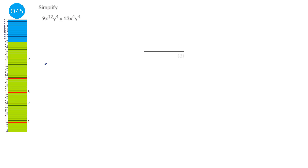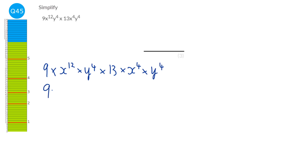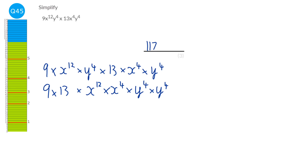Writing in all the times signs: 9 × x¹² × y⁴ × 13 × x⁴ × y⁴. Reordering, multiply numbers first: 9 × 13 = 117. For x: x¹² × x⁴ — when multiplying powers of the same base, add the exponents: 12 + 4 = 16, so x¹⁶. For y: y⁴ × y⁴ = y⁸. Final answer: 117x¹⁶y⁸.